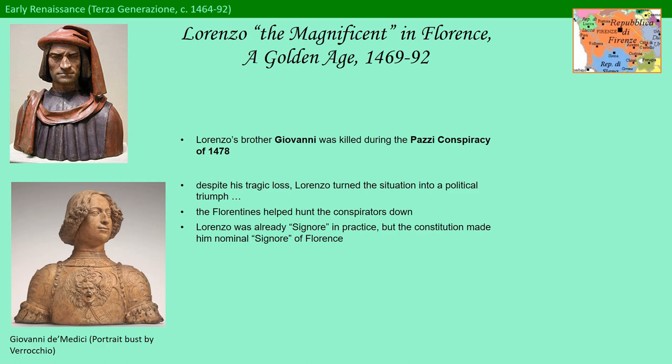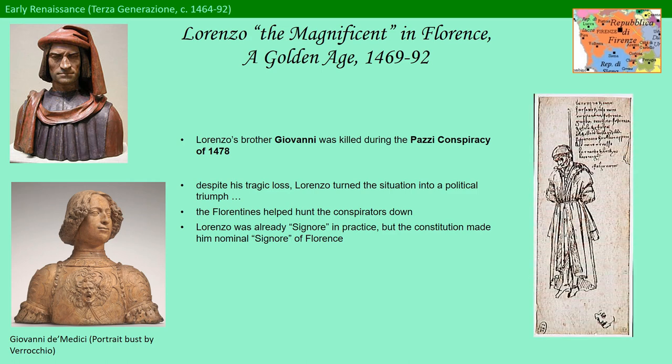The half-successful assassination was considered especially egregious because it took place during High Mass in the Florentine Cathedral before thousands of witnesses. Despite his tragic loss, Lorenzo turned the situation into a political triumph and even gained the love of the Florentines who participated in hunting down the conspirators. Ultimately, about 80 people were hanged, and Leonardo, who was also a young man in Florence at this time, added to the naturalistic drawings in his sketchbook with the depiction of a hanged man accompanied by a written description.